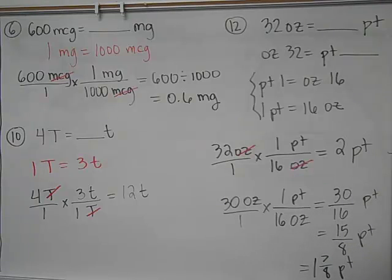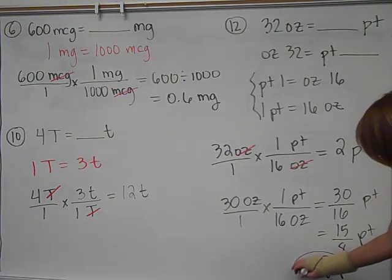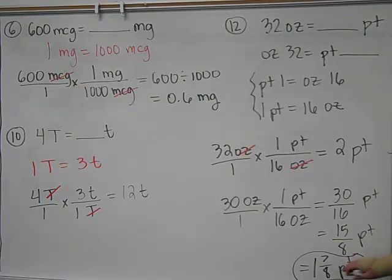1 and 7 eighths. So if you have to turn it into a fraction, that's actually a better answer. 1 and 7 eighths of a pint. But metric is decimal. Household and apothecary are fractions. And if you have to, make them a mixed number, because that makes more sense to people. It's almost 2 full pints. Really, that's what I want to look at it and see. And then I'll say specifically 1 and 7 eighths.